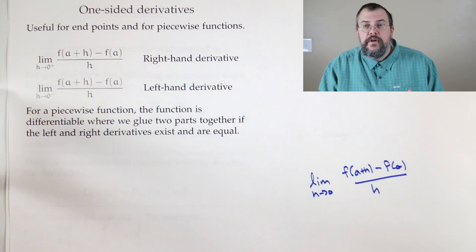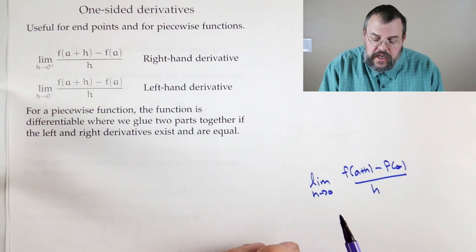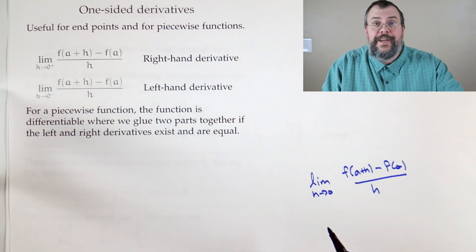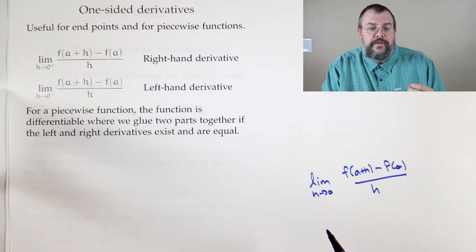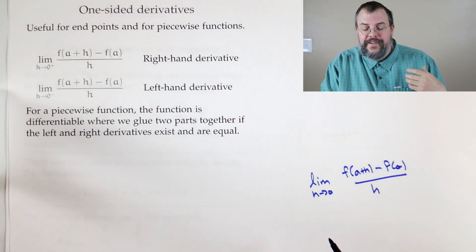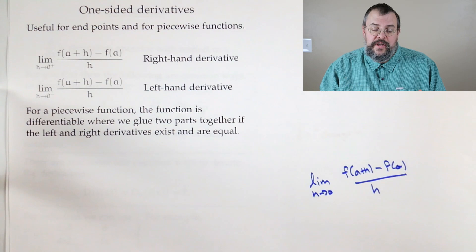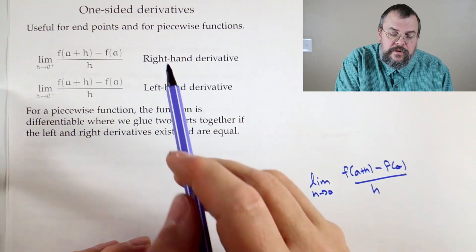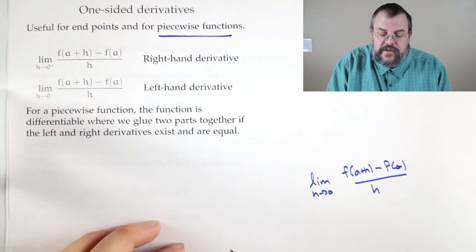So what you can do is you can say, well, let me just restrict h. Let me just assume h is positive. Okay, then what can I conclude? Or maybe, what if h is negative? Okay, then what can I conclude? And so there is some advantage to being more flexible and allowing it to go on just one side or another. It's really useful, by the way, for things like piecewise functions.